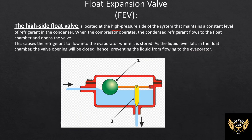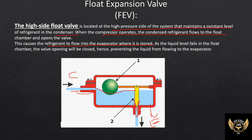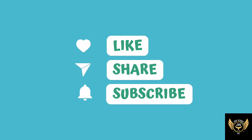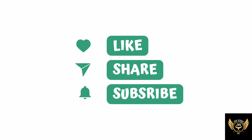The high side float valve maintains the refrigerant level in the condenser. The condenser maintains a constant level of liquid refrigerant. When the level increases, the valve opens to release refrigerant through the pipe, and the amount of refrigerant flow is regulated accordingly. The float valve will close when the level is restored.